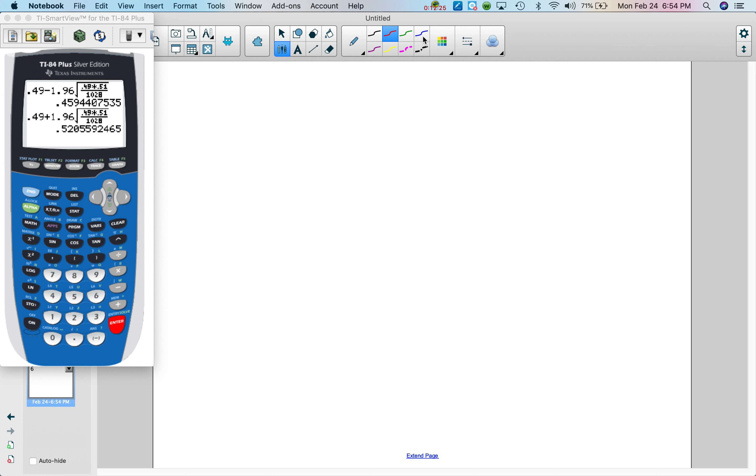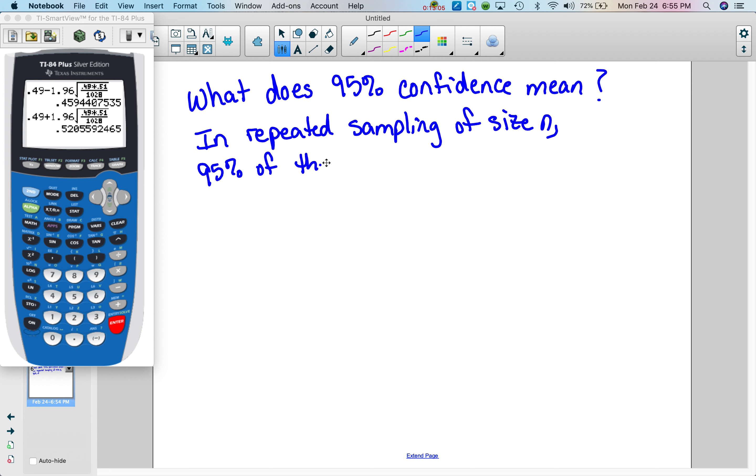Then there's another question, and this other question is what does 95% confidence mean? And this is what it means. In repeated sampling of size N, 95% of the confidence intervals created will capture the true proportion.